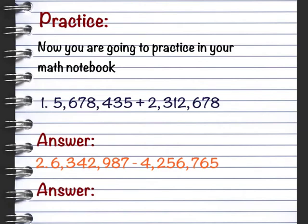To wrap up our lesson today, I'd like you to write down the following two problems in your notebook. The first one, write a number one and write 5,678,435 plus 2,312,678. Make sure you follow the steps. The first step is to line up your numbers. So make sure you know where the ones place value is. You can write the numbers however it is easiest for you to line them up.